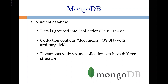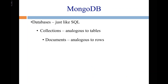The hierarchy in MongoDB: you have databases, just like in SQL; you have collections, similar to tables; and then documents, analogous to rows. But try not to think of rows or columns from this point forward. It's a key-value store — some key pointing to some JSON object.